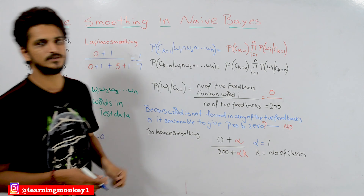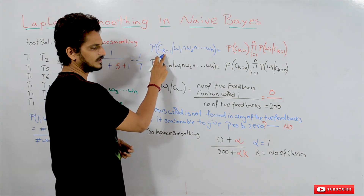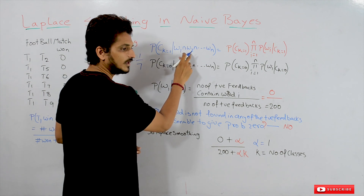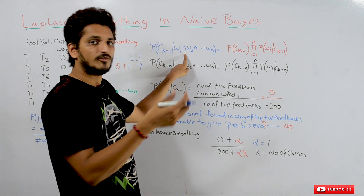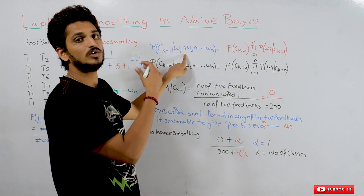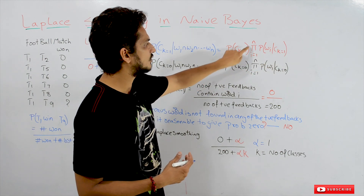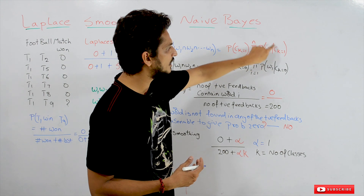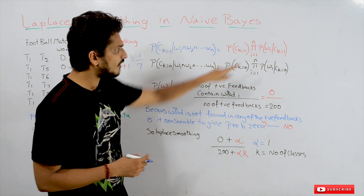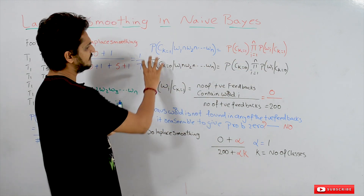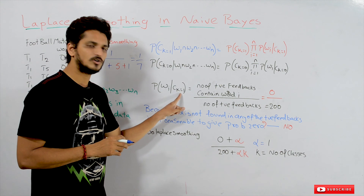Now let's apply Laplace smoothing to Naive Bayes. In our last class, we derived that the probability of class CK equals 1 (positive class) given a testing feedback — a set of words — is the product from i=1 to N of the probability that word i belongs to class CK=1. To calculate the probability that word i belongs to the positive class, we use the same equation for the negative class as well.